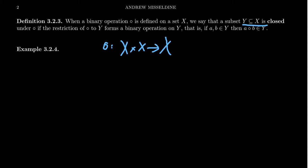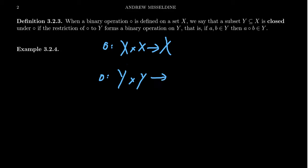What if we have some subset Y inside of X? Can we define a binary operation on Y using the binary operation that's on X? Is there a way of defining circle so that Y cross Y gives us something? Well, since Y belongs to X, and because we have an operation for every possible pairing of X and X, if we restrict the domain to only be operands coming from Y, then this result will be well defined.